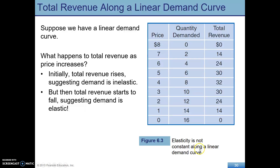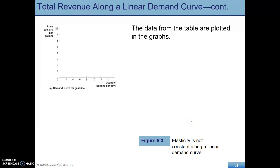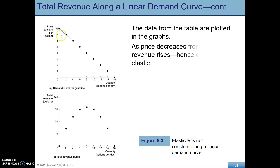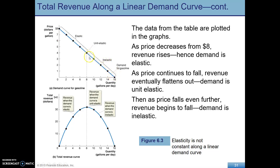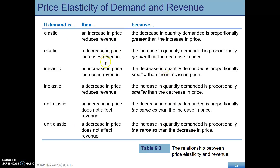An important fact to note is that elasticity is not constant along a linear demand curve. As you move down the demand curve, demand is going to become more inelastic. So there's an elastic region, a point of unit elasticity, and then down at the bottom is a region of inelasticity. As price falls initially in the elastic region, revenue rises, maxes out at that unit elastic point, and then in the inelastic region, total revenue is going to fall. So you need to be able to think through what's going to happen when you change the price — understanding this relationship between price, elasticity, and revenue.